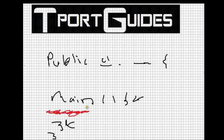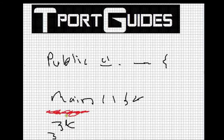Also, if you assign a value to a local variable and the code within the method is executed, then once execution leaves the method, the variables and values assigned within that method are lost — unless you have a return statement within your method returning the end results to whatever called it.